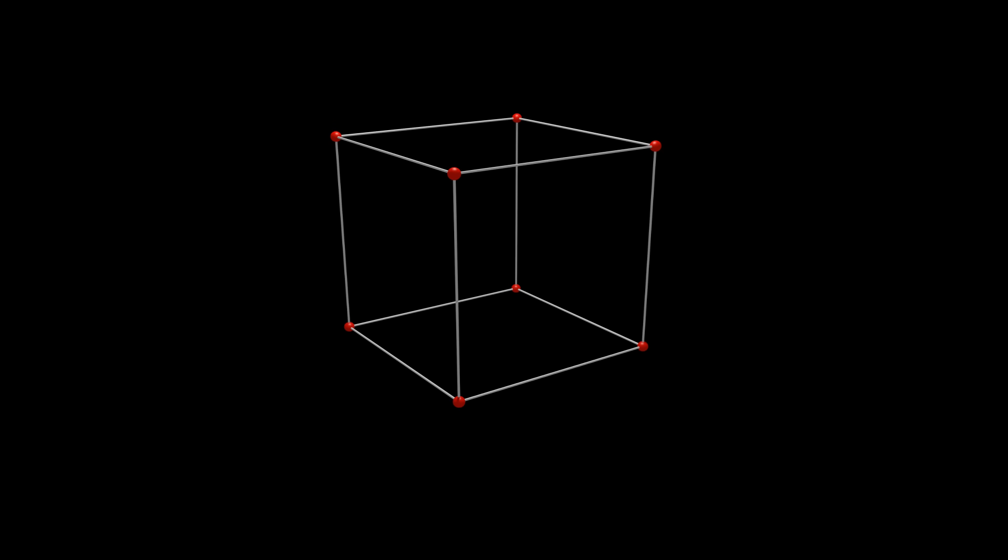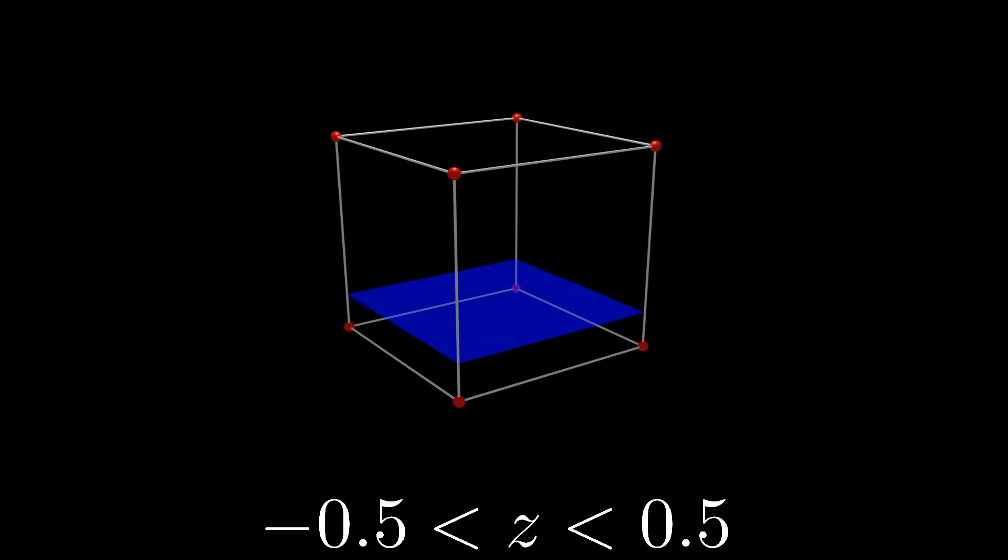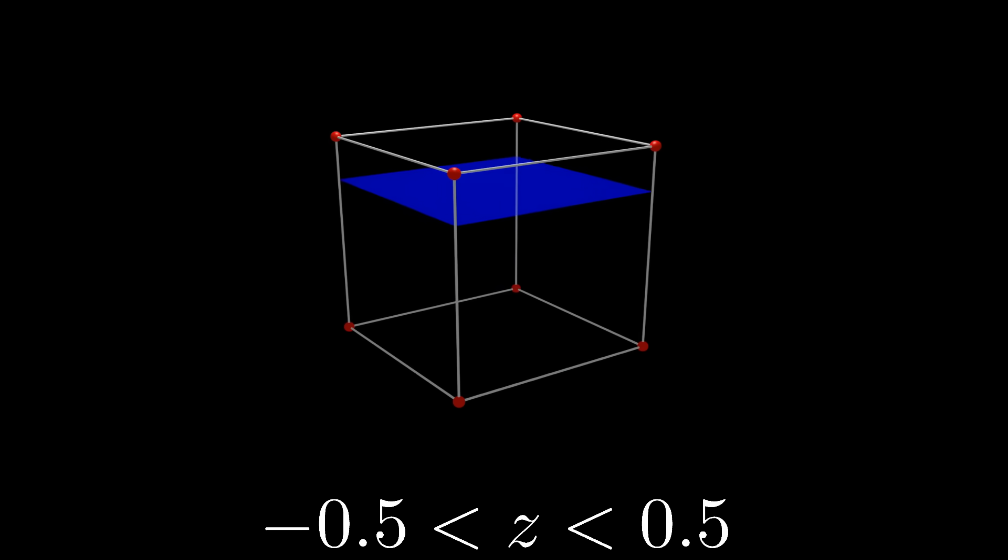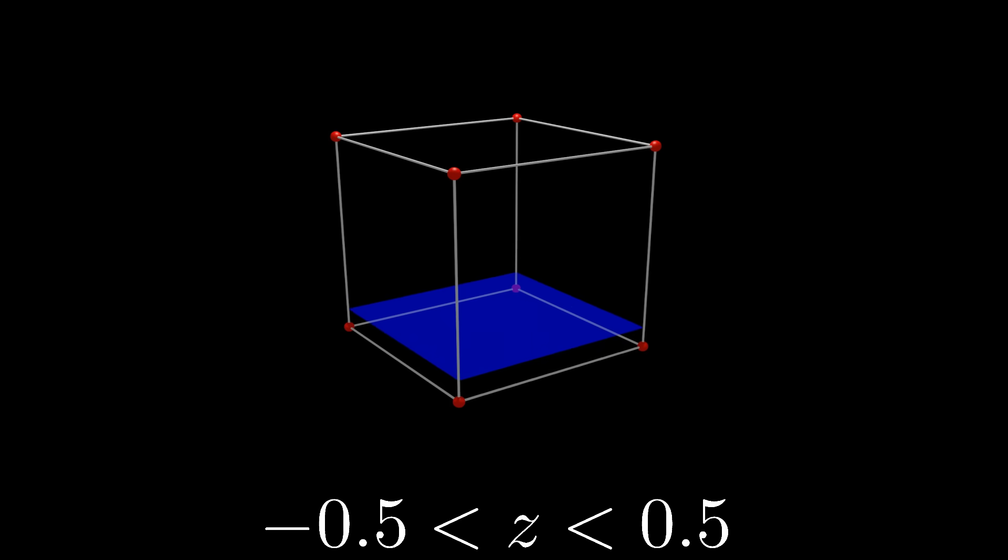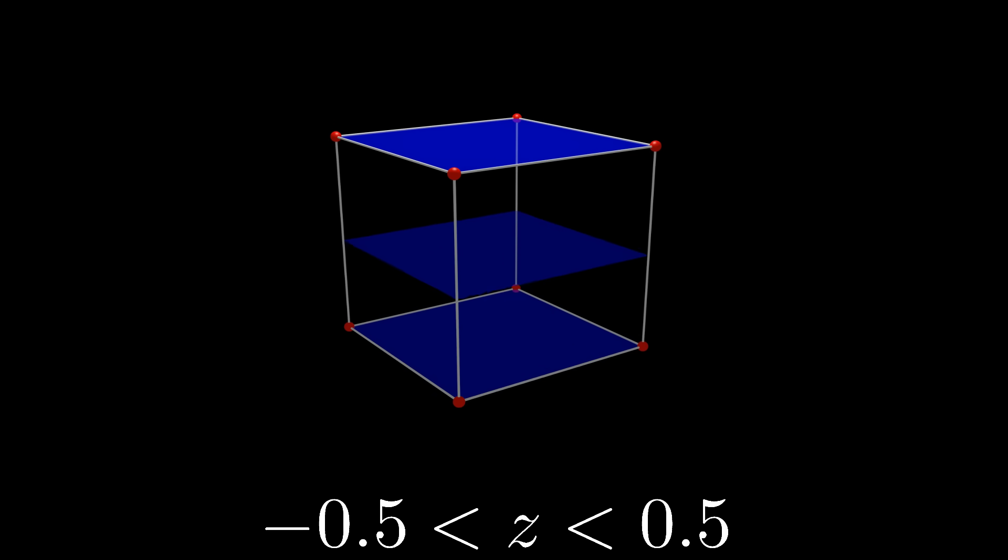We can represent this cube as a series of planes or cross-sections cut along the XY or Z axes. Obviously, the 2D planes are not actually 3D cubes. Rather, they are representations of 3D objects in a 2D space. If we take two planes, one at Z equals negative 0.5 and another at Z equals positive 0.5, and connect these two planes with lines that represent all other possible planes along that axis, we once again see a cube.